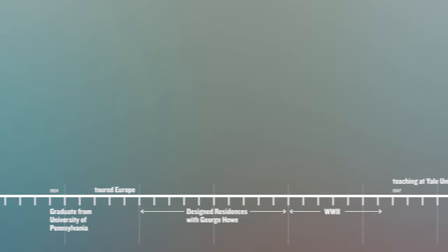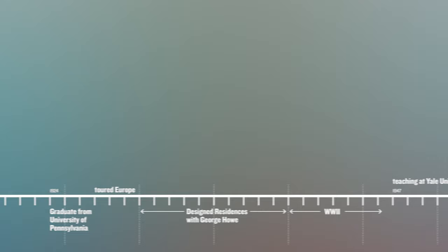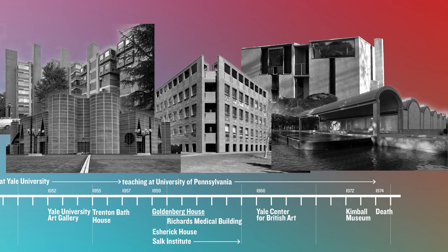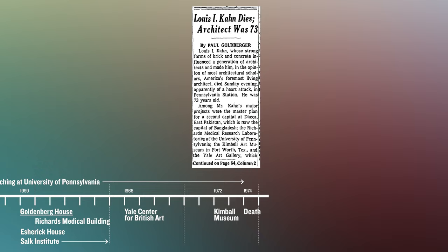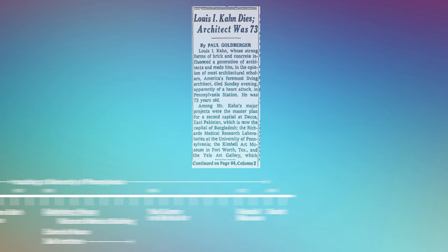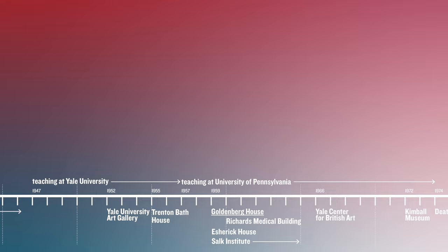While talented, Kahn would remain relatively obscure through the 1930s, 40s, and into the 1950s, but would then explode into a decade of the most prolific architectural production ever seen by an architect. Through this time he'd be regarded as one of the best architects living, until his untimely death by heart attack on a return trip from India, where his body would spend three days in a train station bathroom until he was discovered. But in 1959, when the Goldenberg House was designed, he was on the cusp of his creative boom.